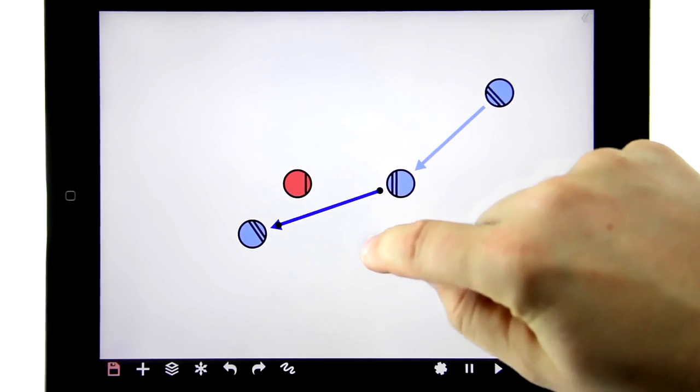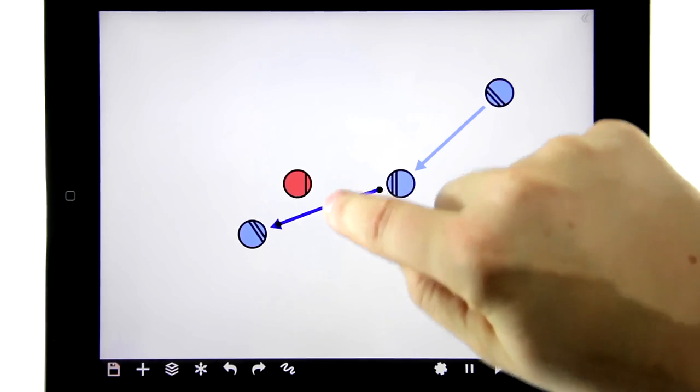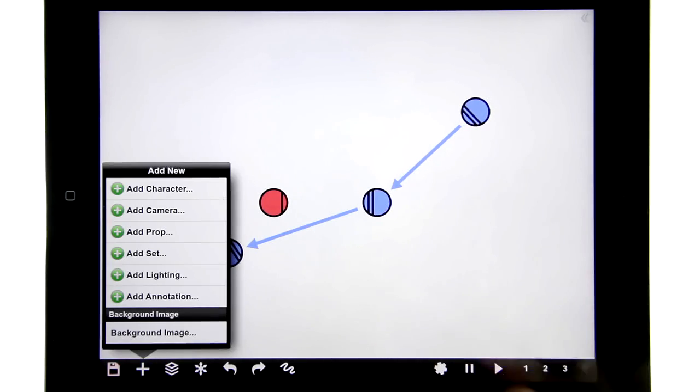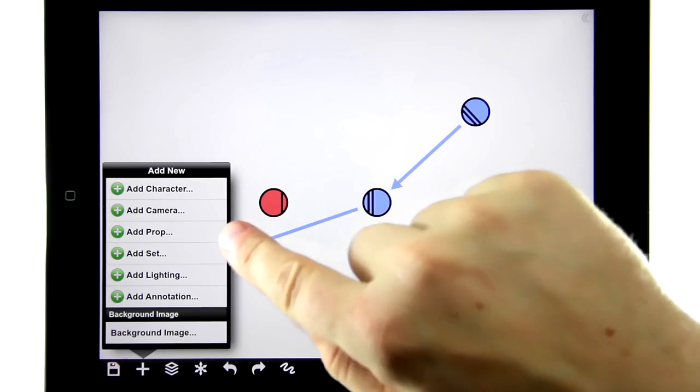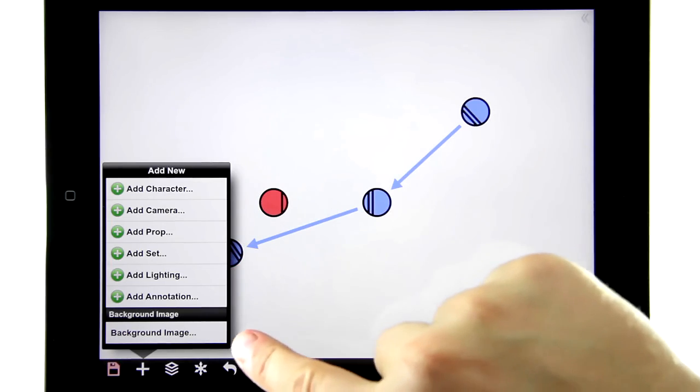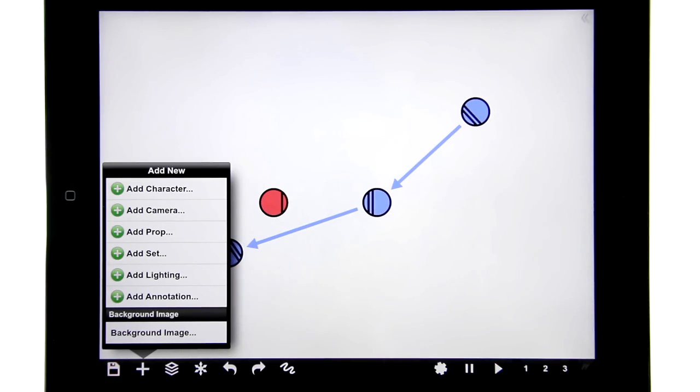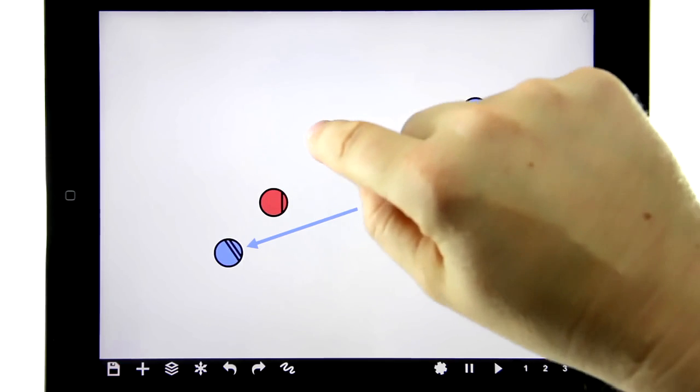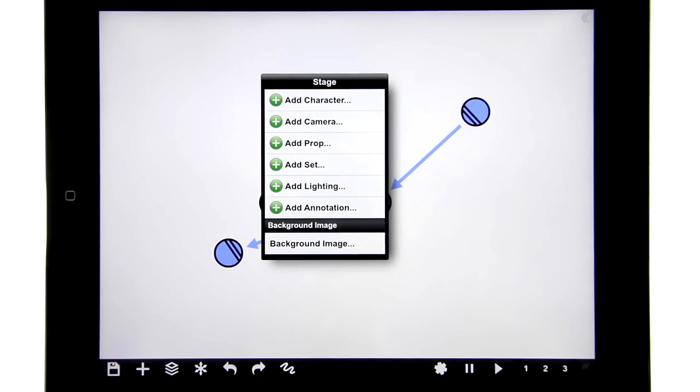Let's add some cameras. There are basically two ways to add stuff to a scene. First is use the plus sign menu down here. Here you can add characters, cameras, props, set and lighting equipment. You can also bring in a background image if your production designer has a drawing of the set. They can just block on top of it.